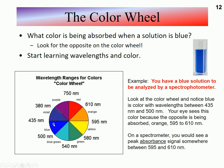So if you see blue that means it's transmitting 435 to 500 nanometer light mainly. And then the sample is absorbing between 595 and 610 nanometers.